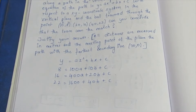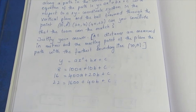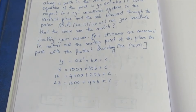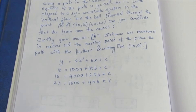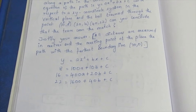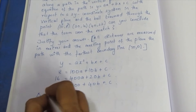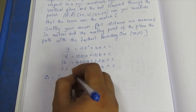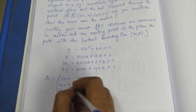You can use any method. For example, some prefer Cramer's rule — it is easy, so we can use it. The coefficient matrix has rows: 100, 10, 1 / 400, 20, 1 / 1600, 40, 1.